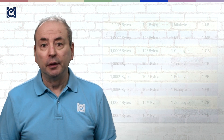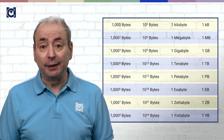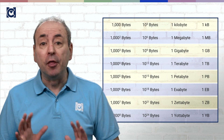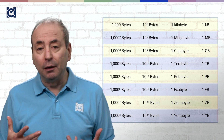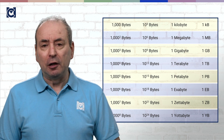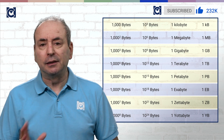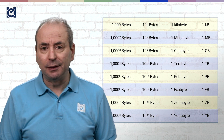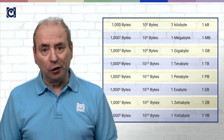But those are just consumer examples. Typical corporations work in terms of petabytes. And the big corporations — the ones that manage our digital existence online — are increasingly managing in exabytes and zettabytes, and soon yottabytes.